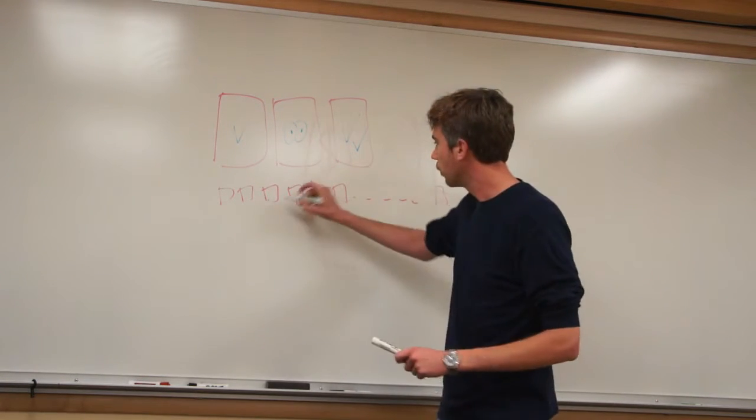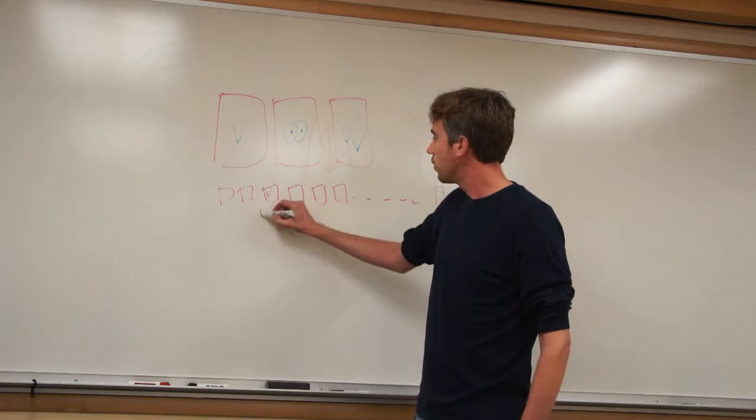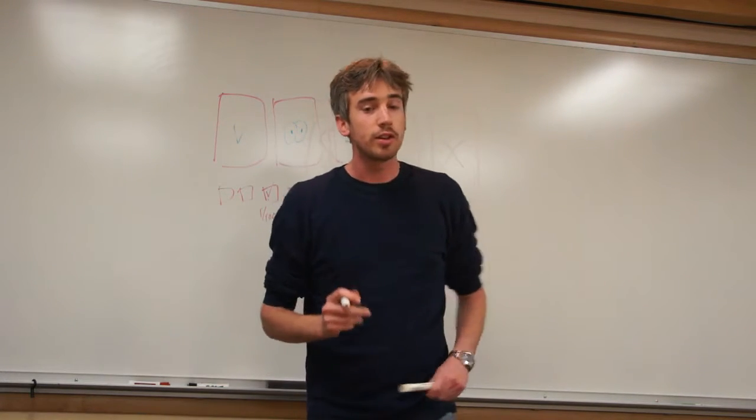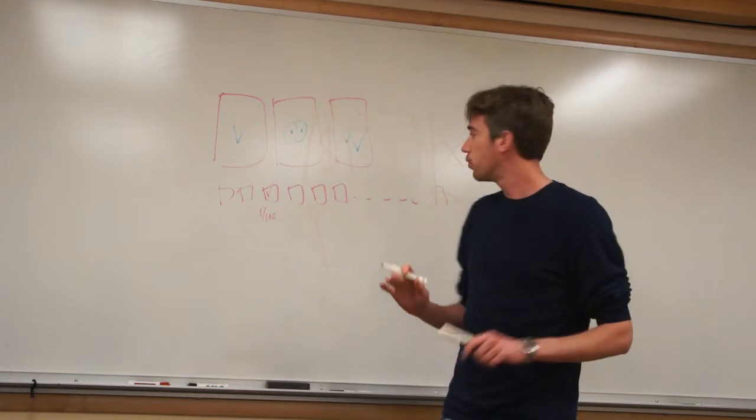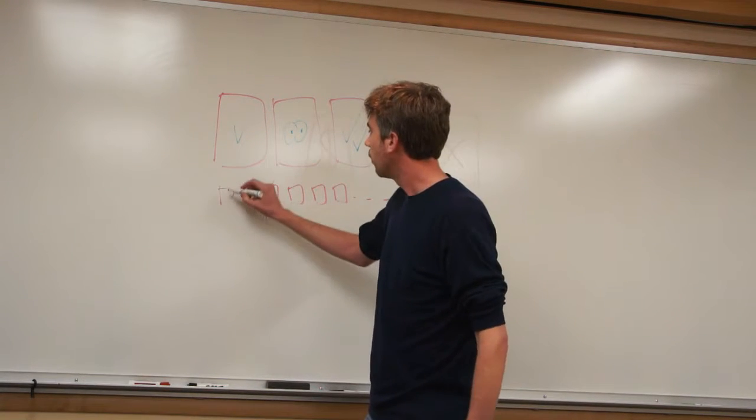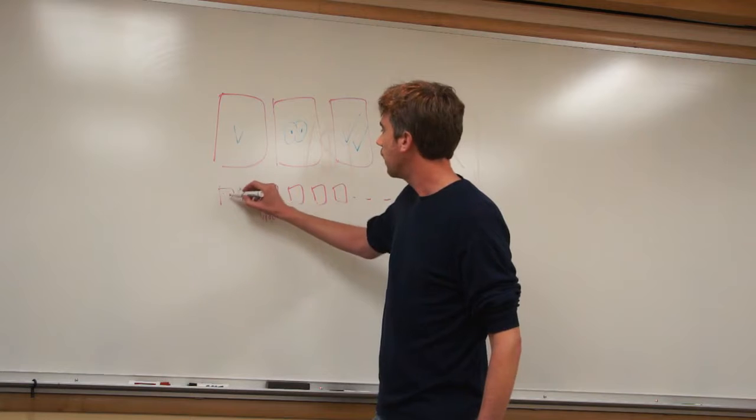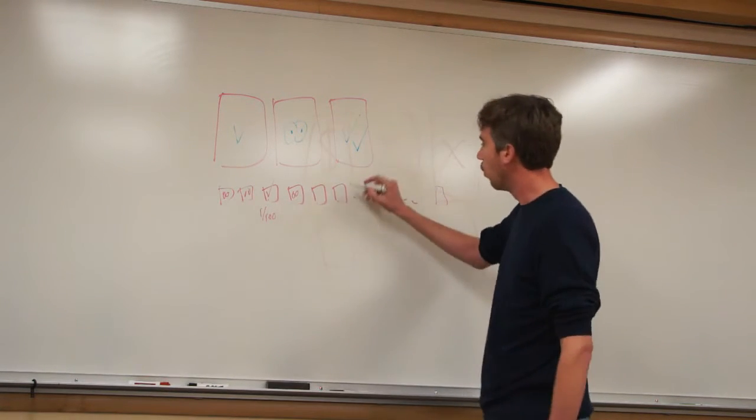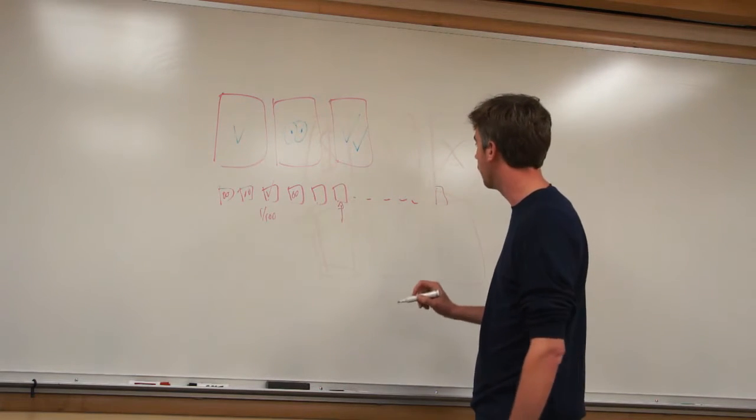You get to pick one door, so you pick that door. Your odds are one in a hundred of getting the prize. And now the game show host tells you he's going to open up all the other doors except for one. So you get to see what's inside this door, this door, all of them, except for one other door, this one over here.